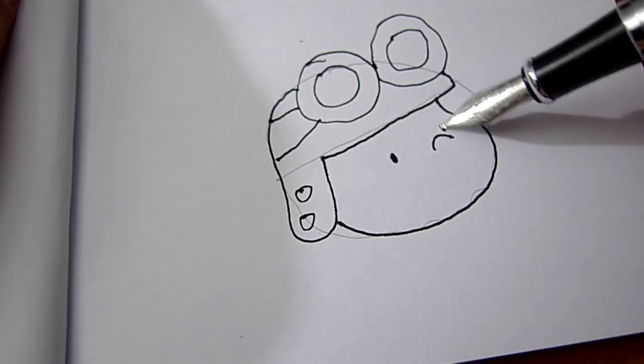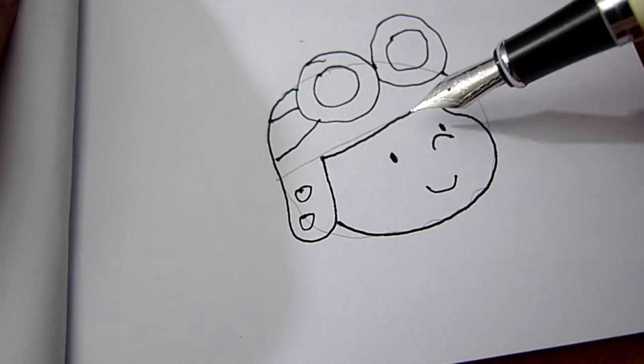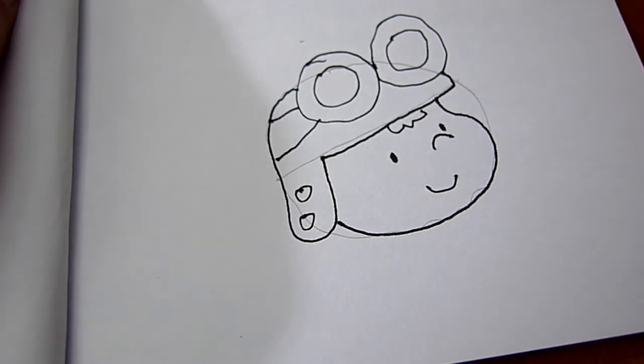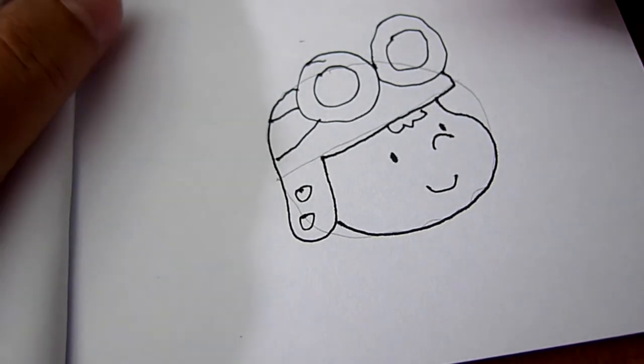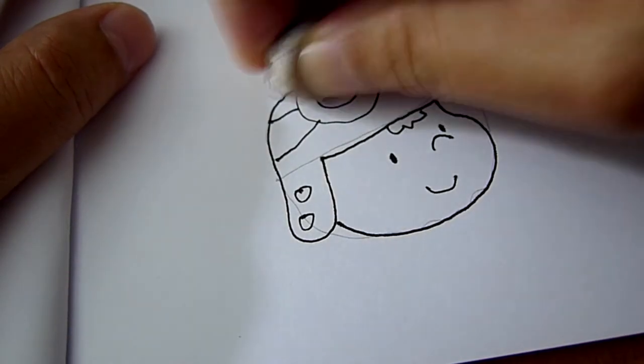Put two eyes for him, he's looking at you, a smile and the hair. Then what you do is get the rubber and rub off all the stuff that you don't want.